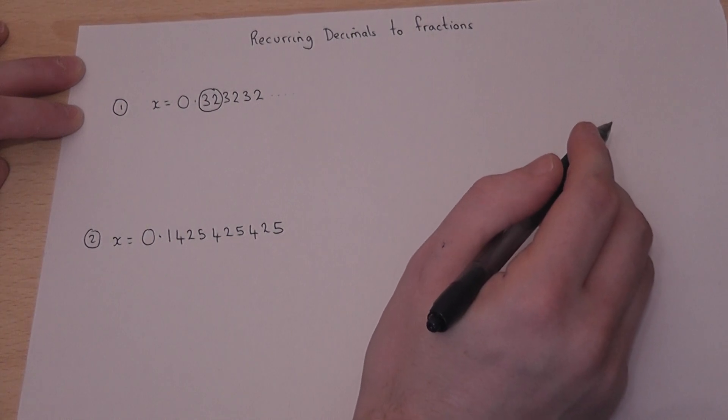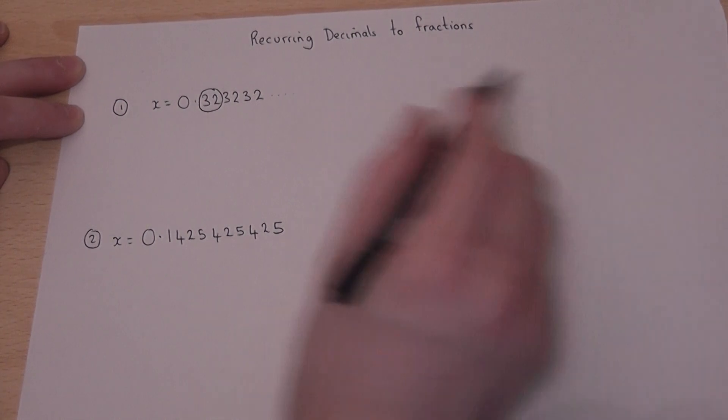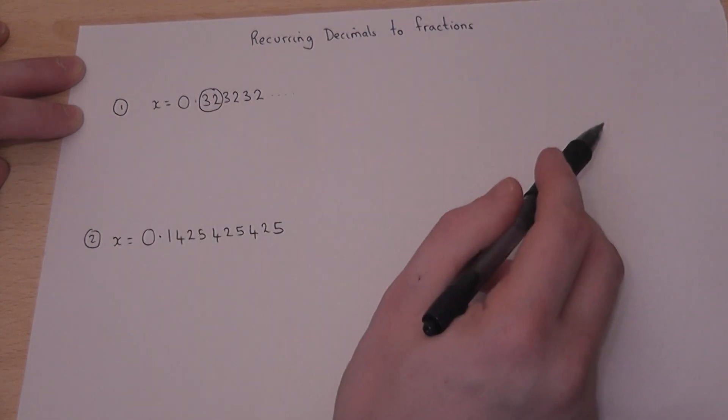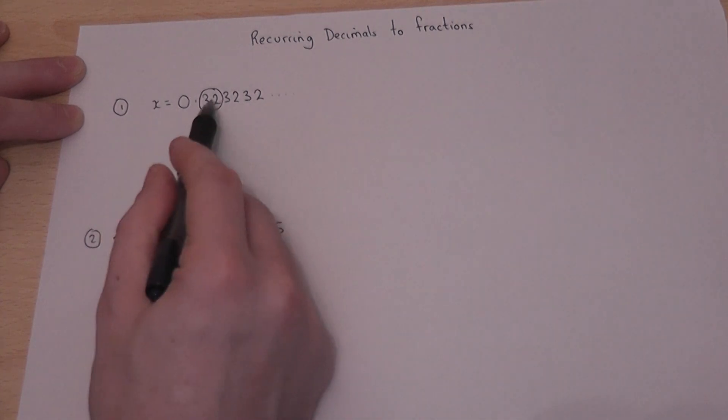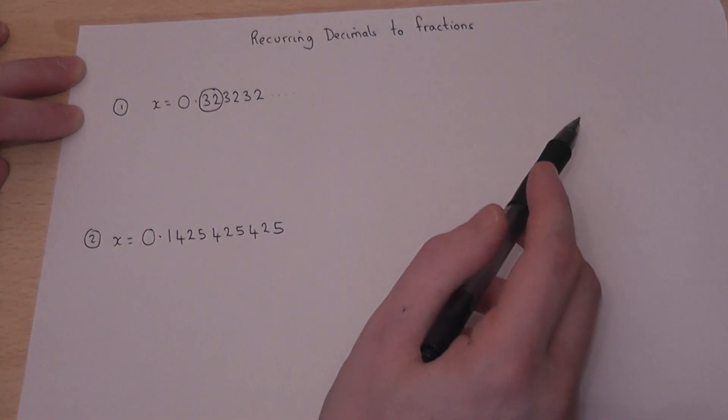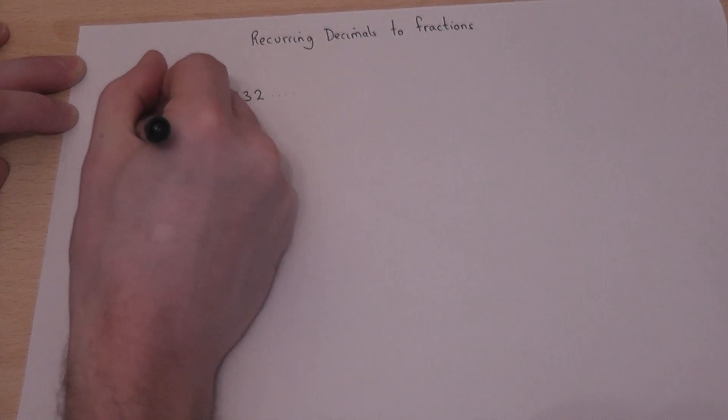And then you times by enough tens to get that just to the left of the decimal point. So there's two digits there, so if I times by 100, so if I work out 100x.